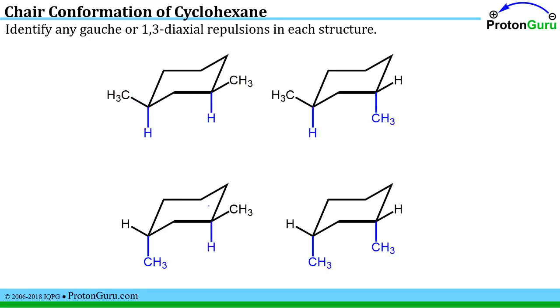The next part of the problem is a little more difficult. It asks us to identify any gauche or 1,3-diaxial repulsive interactions. Well the gauche interactions we learned about and identified using Newman structures in our video for lesson 1.15, if you want to review that.